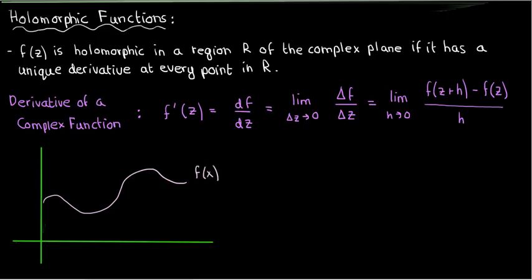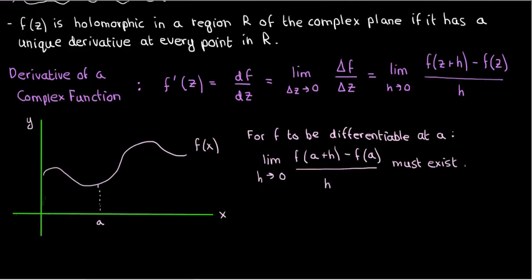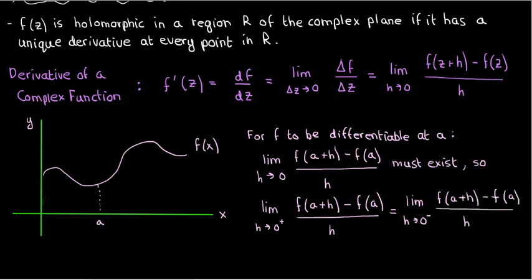Recall that if you had a real function f of x, for f of x to be differentiable at some point a, you needed the limit of f of a plus h minus f of a over h as h approaches zero, you needed that limit to exist. Notice that I'm using h to denote a small change in x, and I've done the same for z as well, so hopefully that's not too confusing. For this limit to exist, we need the limit from the right and the limit from the left to exist. Additionally, we need those two limits to equal each other. In other words, the function has to have its right derivative and left derivative equal each other at that point.